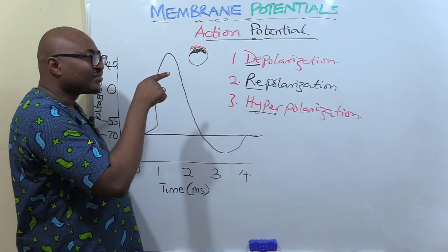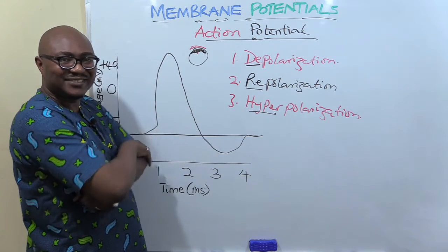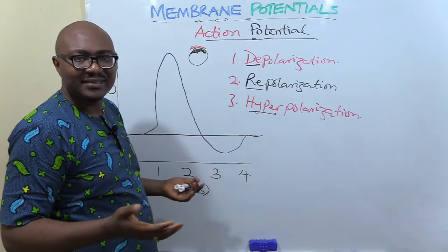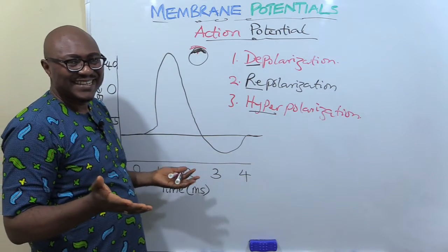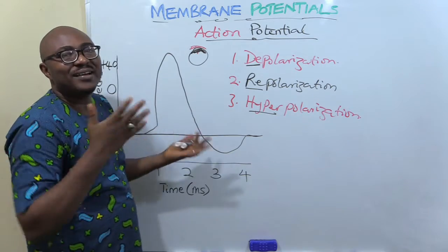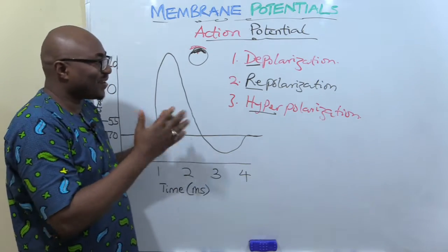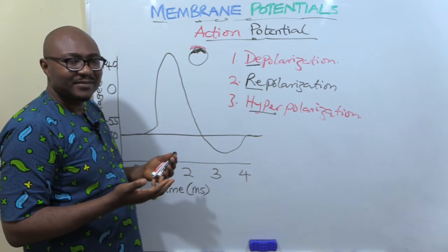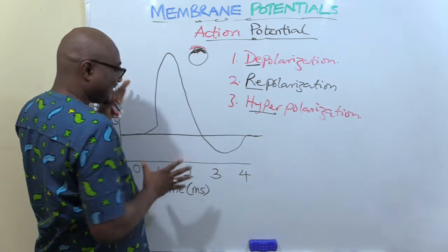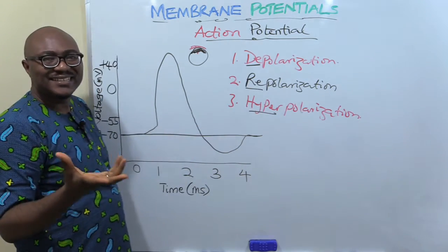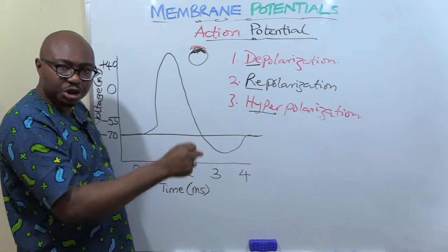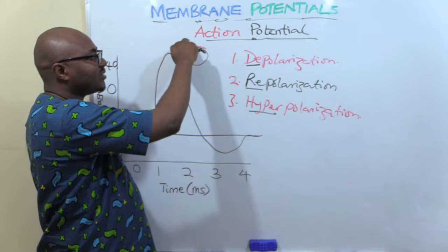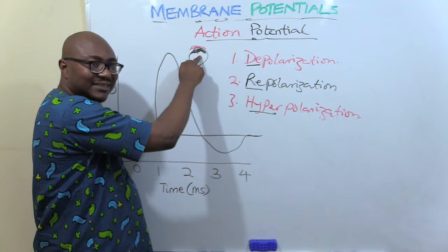Depolarization means reducing that polarization. In English, if people are polarized along ethnic lines, it means they have differences — they disagree. So polarization means difference. Depolarization is simply a reduction in the difference between what is inside and what is outside — that negativity inside is now reducing.